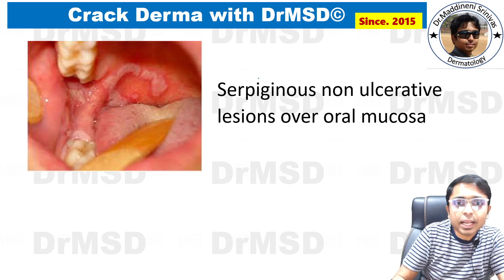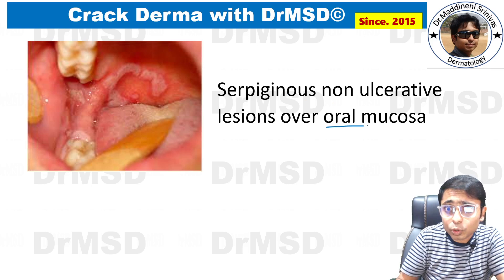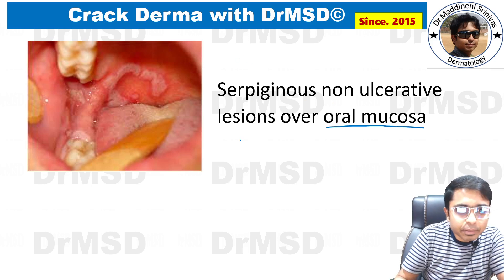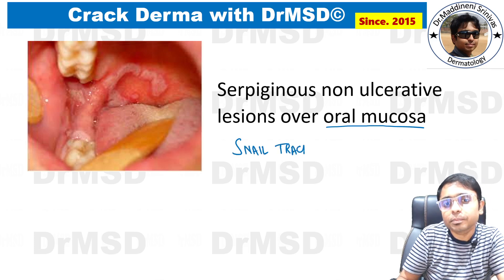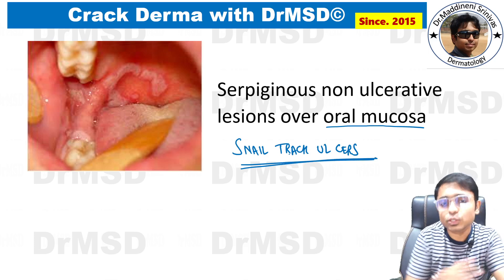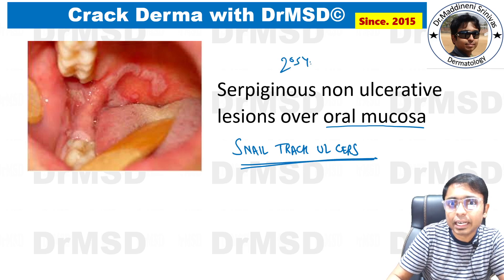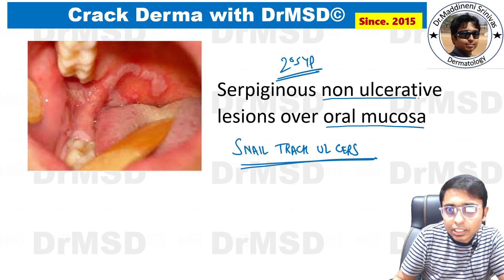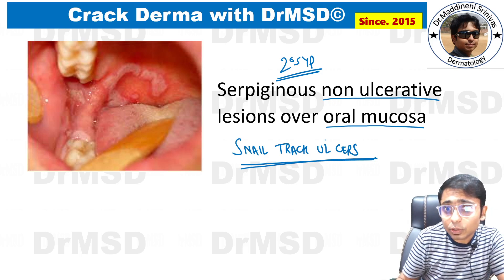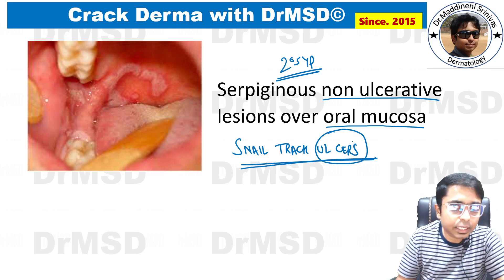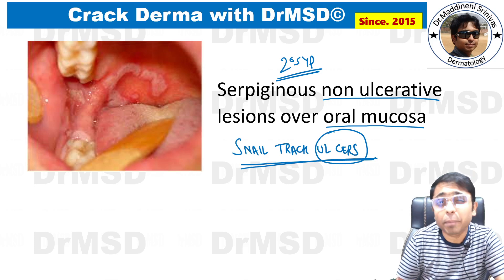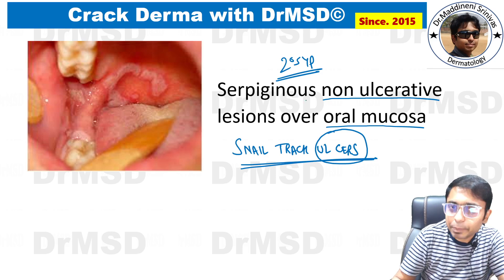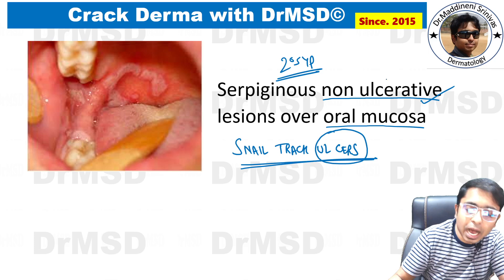Finally, serpigenous non-ulcerative lesions over the oral mucosa are seen in secondary syphilis. If the examiner uses the term 'snail track ulcers,' these are also associated with secondary syphilis. Despite having the word 'ulcer,' these lesions are not true ulcers — they are mucous patches seen in secondary syphilis.